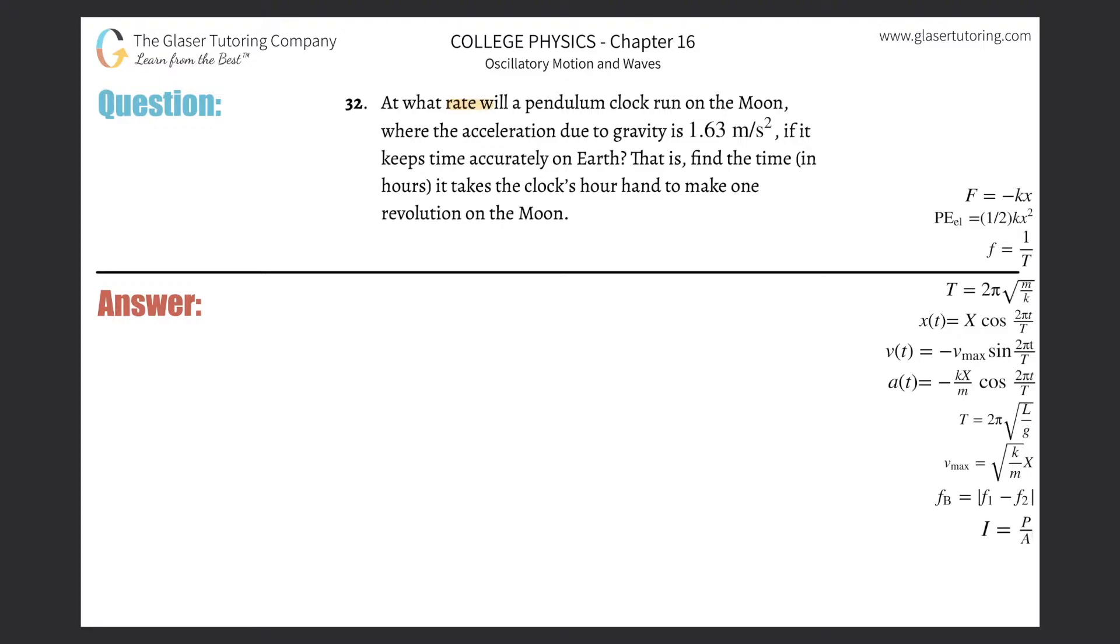Number 32, at what rate will a pendulum clock run on the moon where the acceleration due to gravity is 1.63 meters per second squared if it keeps time accurately on earth? That is, find the time in hours it takes the clock's hour hand to make one revolution on the moon.